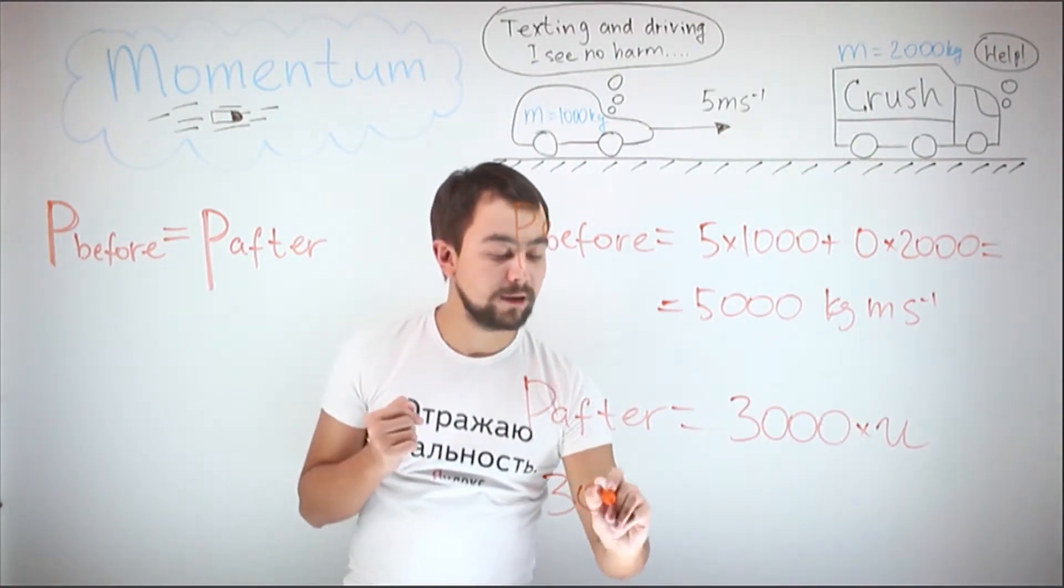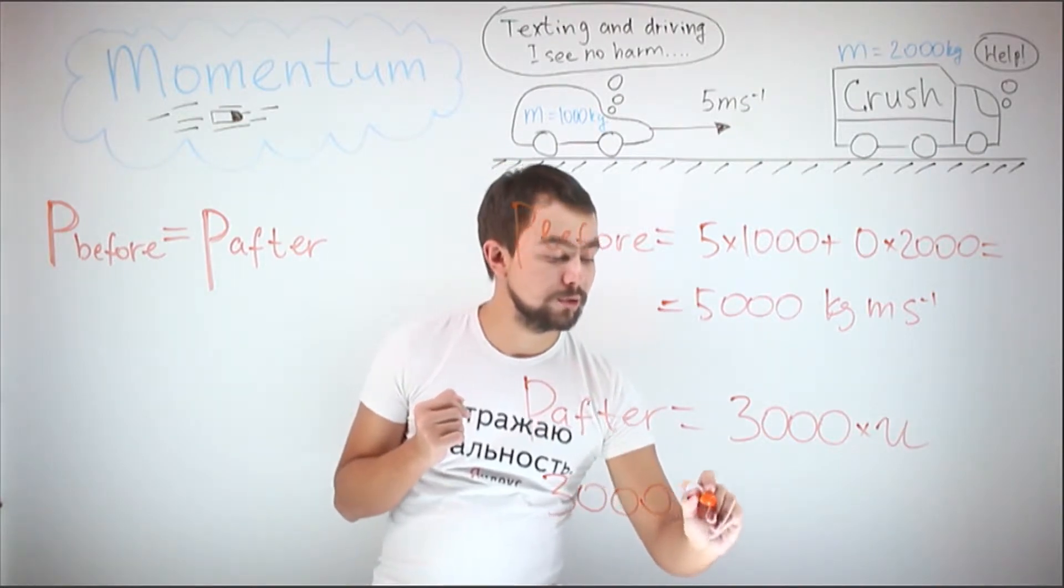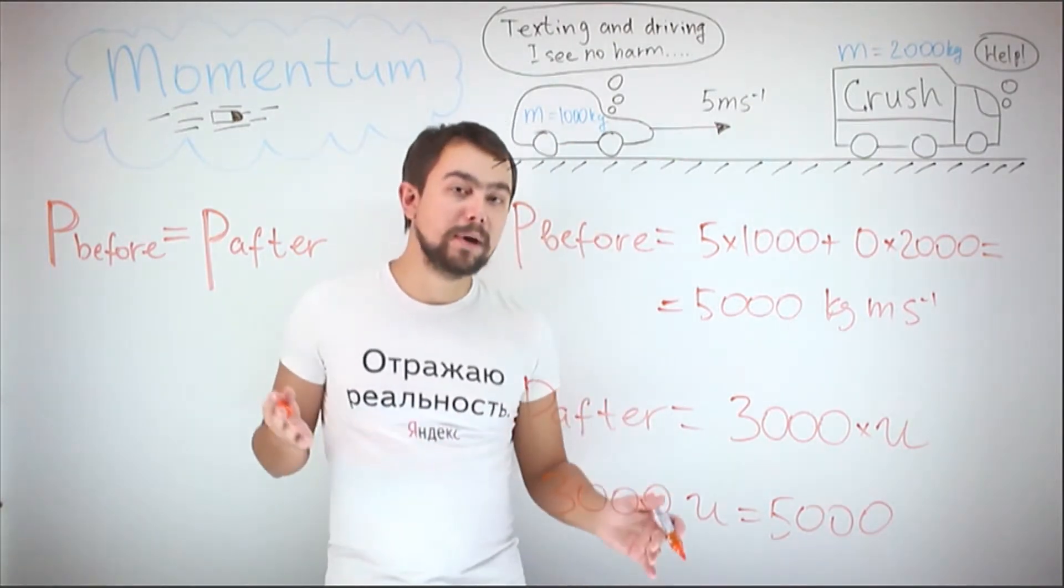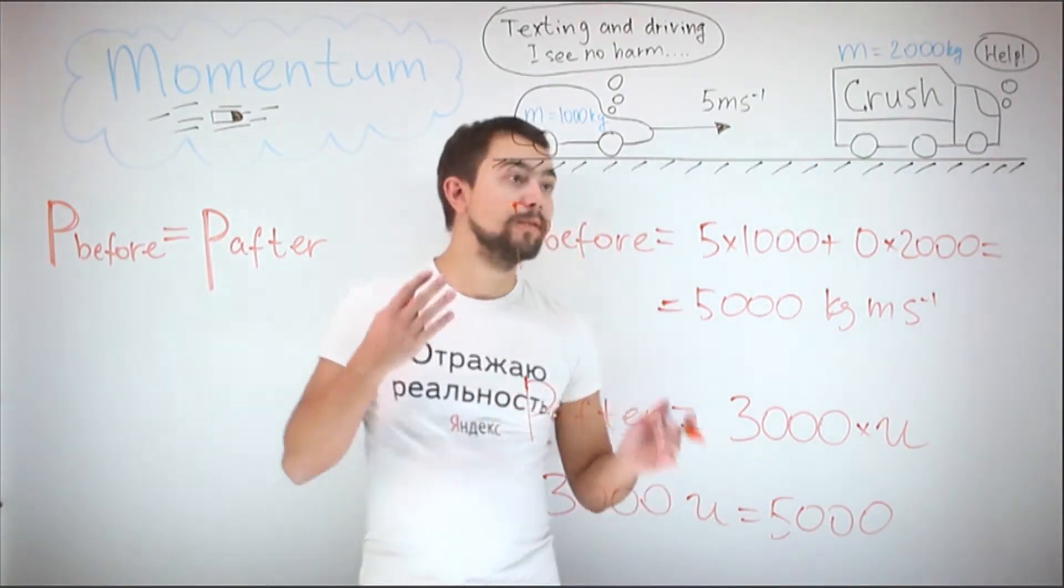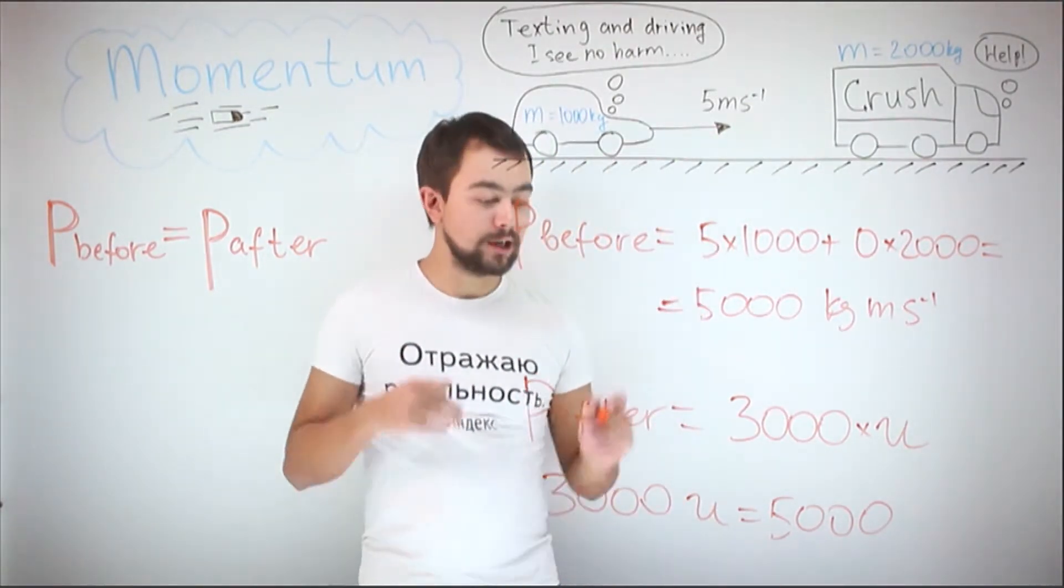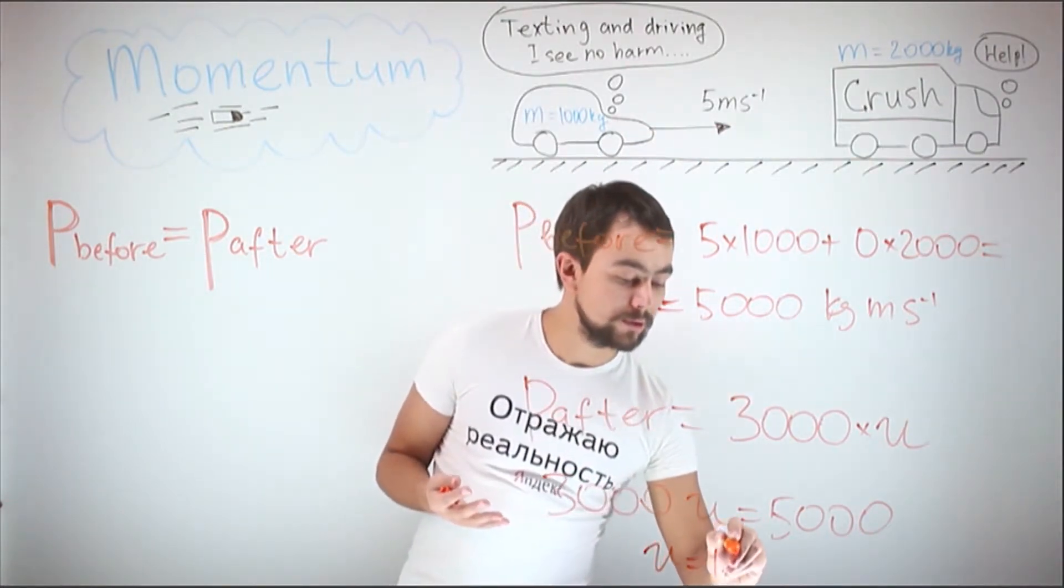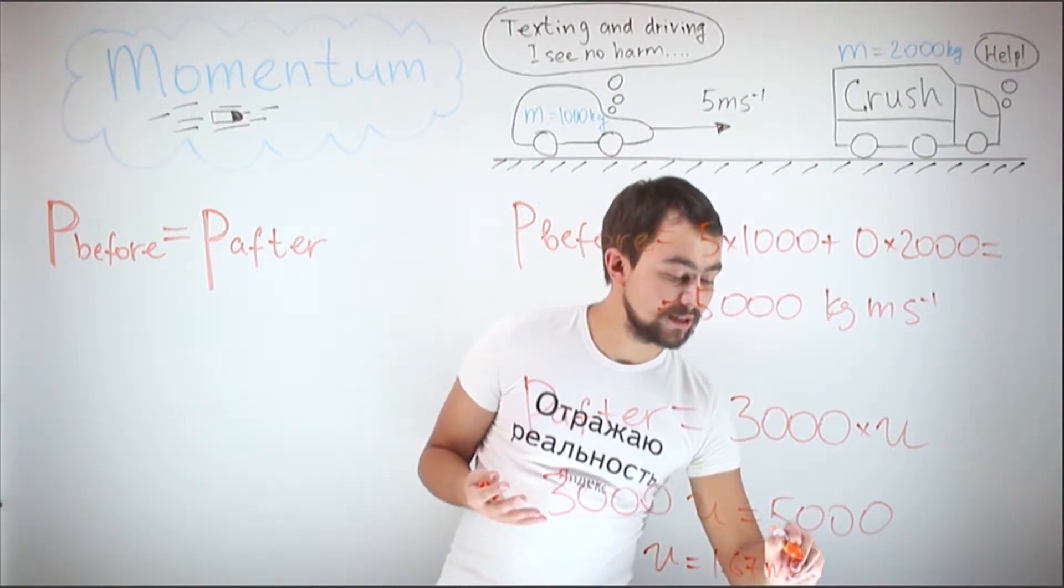So 3,000 times u is equal to 5,000. So the combined velocity of the car and the truck together after the collision is 1.67 meters per second.